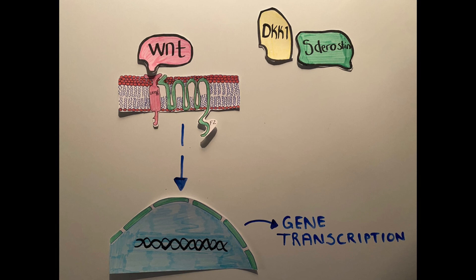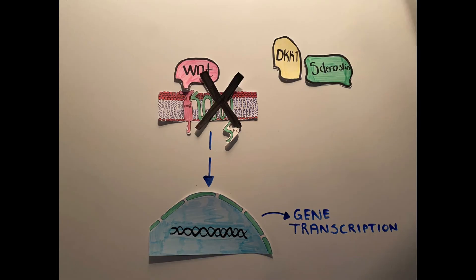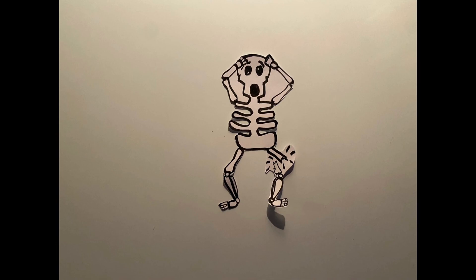Many studies have already shown dysregulation in this pathway leads to various bone disorders including failure of proper bone formation. Studies have also demonstrated that the very well known inhibitors of Wnt pathway, DKK1 and sclerostin, are increased in patients with type 2 diabetes.